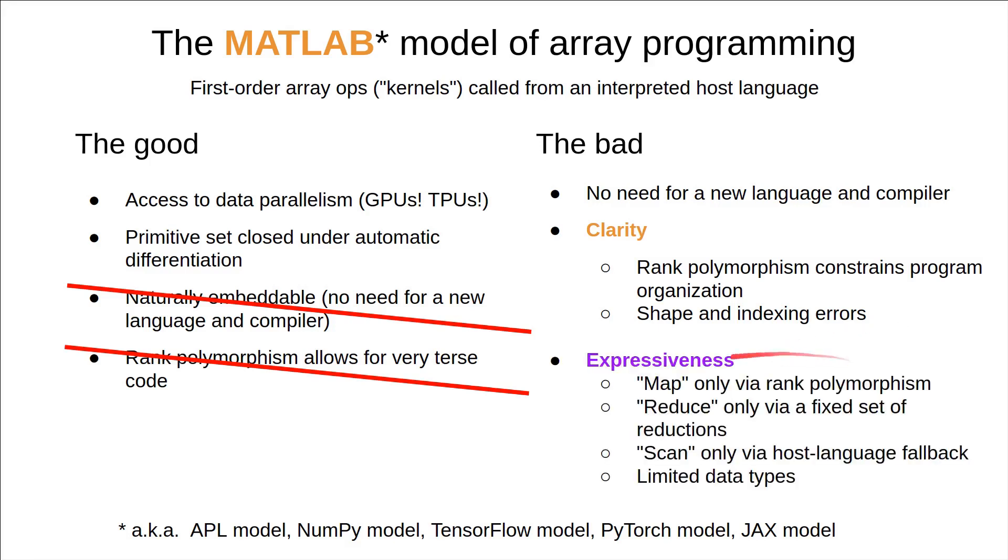But the big one really is about expressiveness. In a proper higher order array combinator language, you at least expect to be able to do map, reduce, and some kind of sequential scan or fold. In the MATLAB model, you get map only via rank polymorphism, and we've discussed the limitations there. You get reduce through some small set of reduction operators like summation and product, and you get sequential scan only by falling back to the host language, and in that case you face a massive performance cliff.